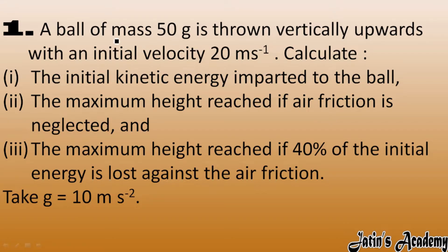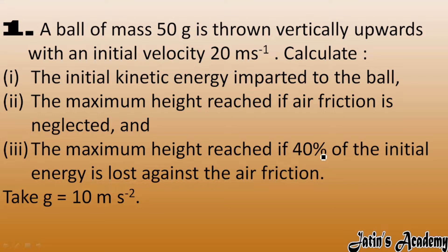If a ball of mass 50 grams is thrown vertically upwards with an initial velocity of 20 m/s, calculate: first, the initial kinetic energy imparted to the ball; second, the maximum height reached if air friction is neglected; third, the maximum height reached if 40% of the initial energy is lost against friction.